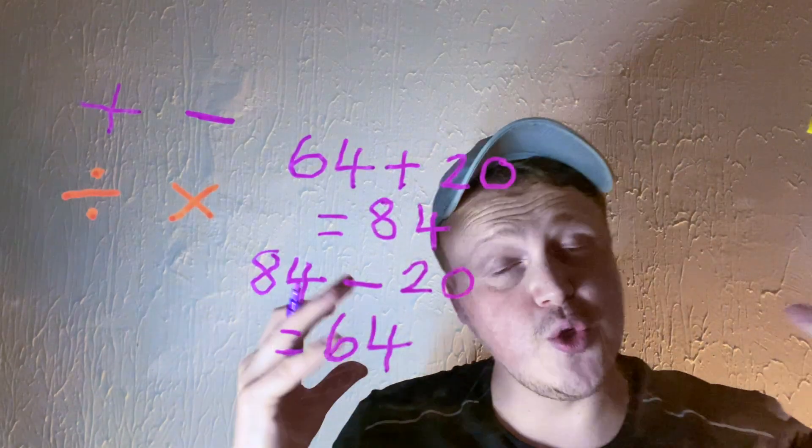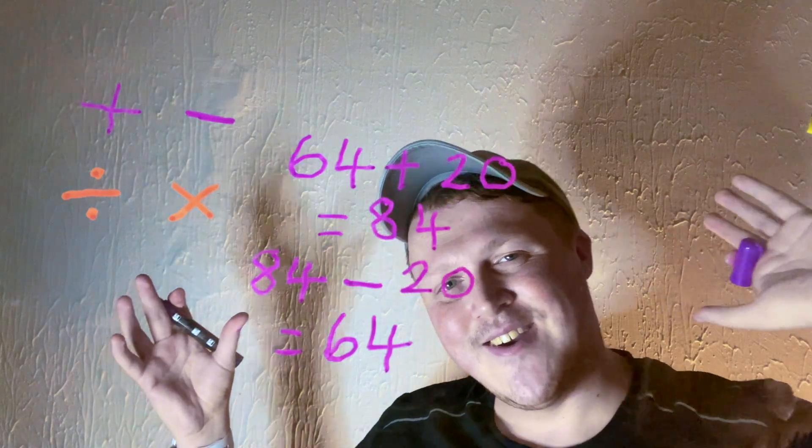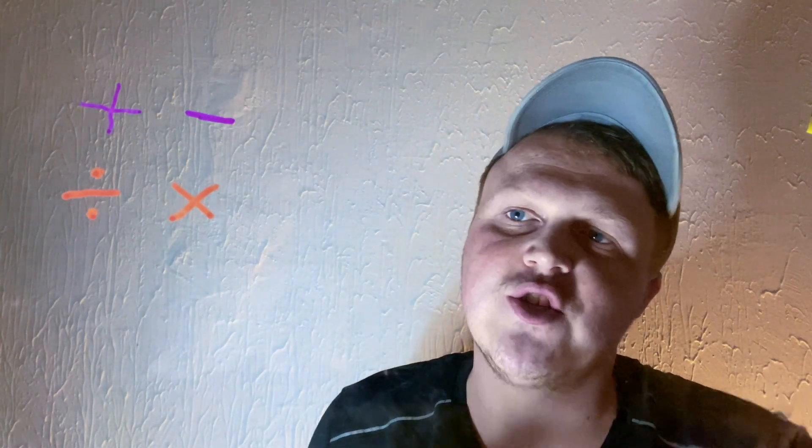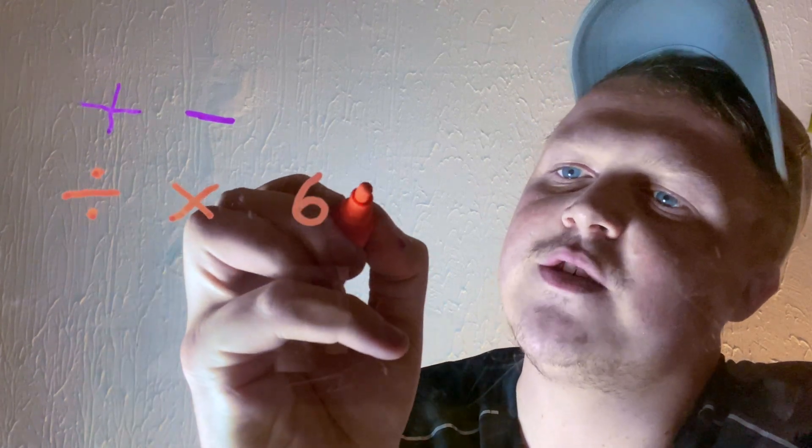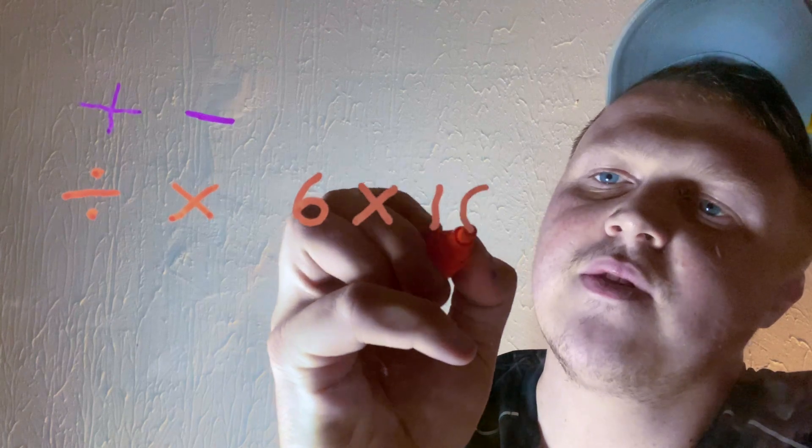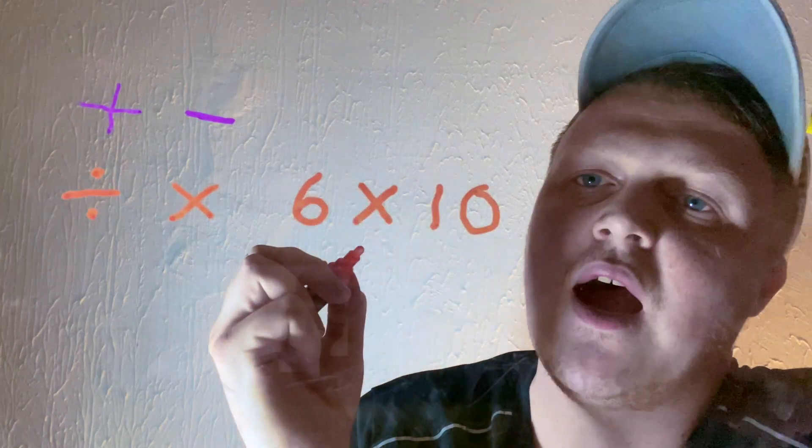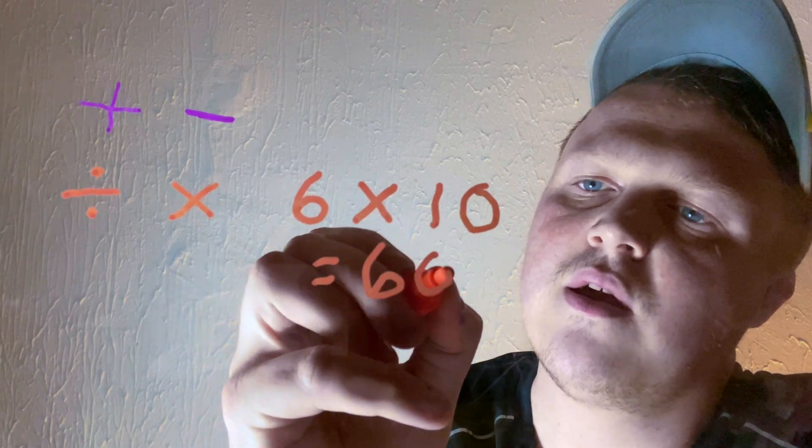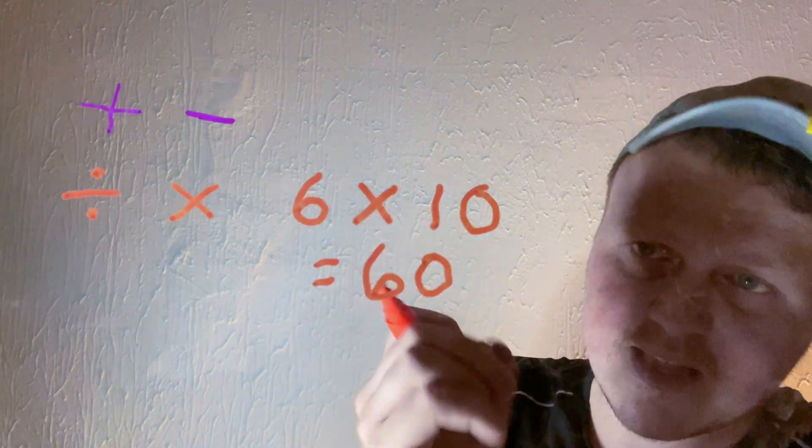And there we've just used the inverse to check if our answer is correct. So we can also do this with dividing and times, which are the opposites of each other. So if I've got 6 multiplied by 10, our answer is 60.